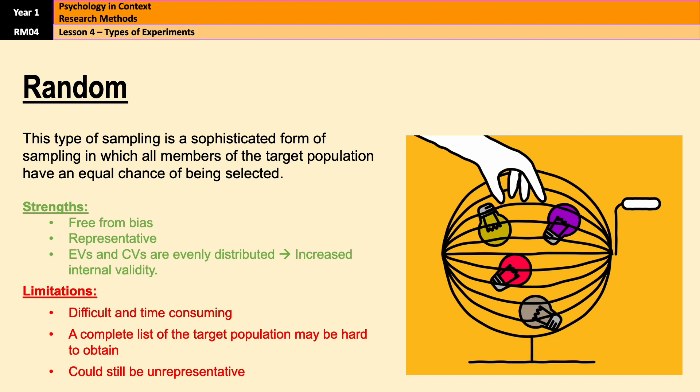The downside is that random sampling is difficult and time consuming to conduct — for example, a complete list of the target population might be quite difficult to obtain, and it takes time to assign everyone a number or set up a random name generator. Also, you could still end up with an unrepresentative sample. Statistically a random sample should be more representative than other techniques, but there's still a chance you end up with, say, 25 male psychology students from Manchester — unlikely, but possible.